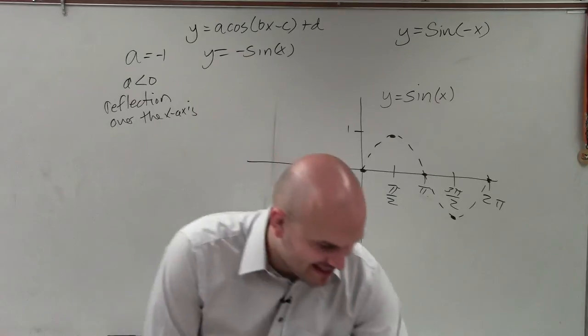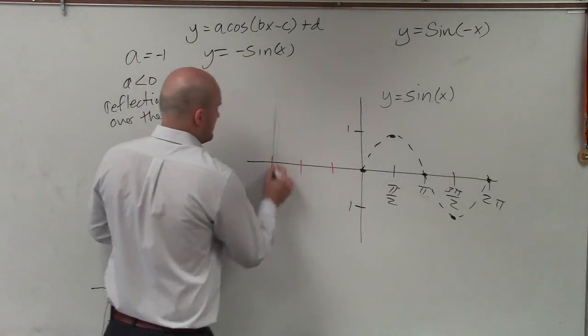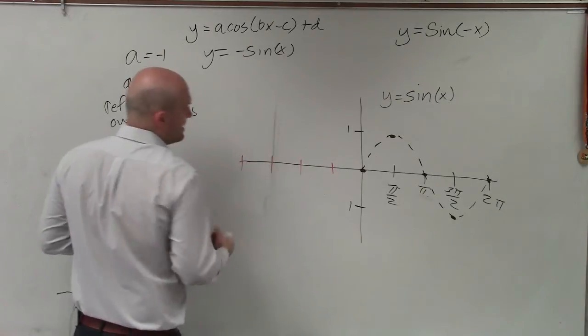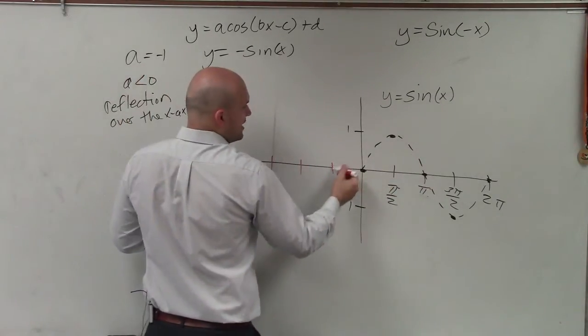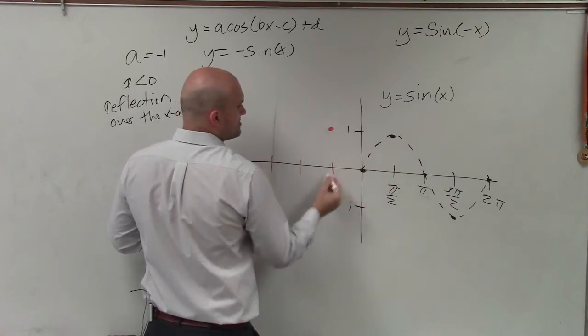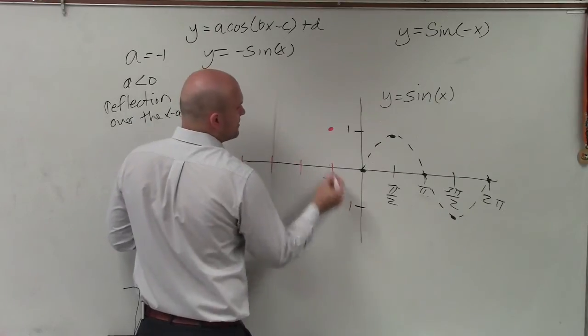So now if I am going to reflect that about the y-axis, all I'm simply going to do is now I'm just going to take all these points and flip it over. So if this is over π/2, up 1, now this is left at negative π/2, up 1.